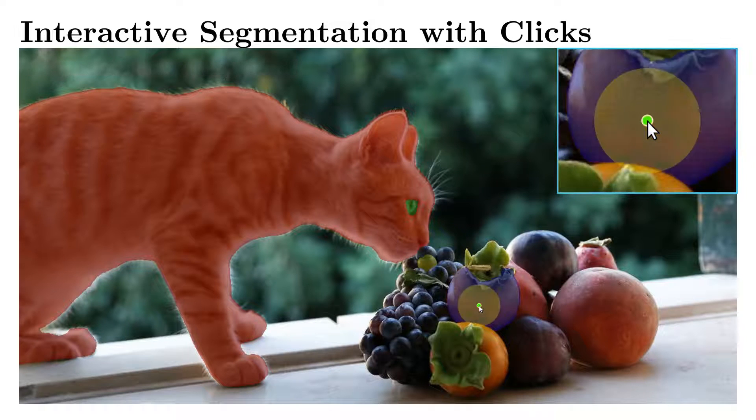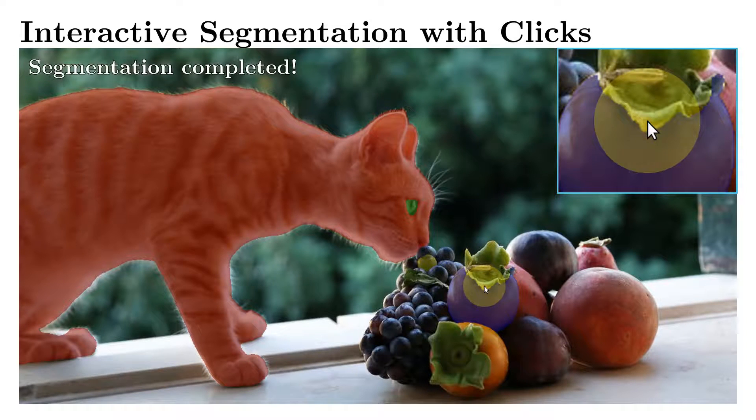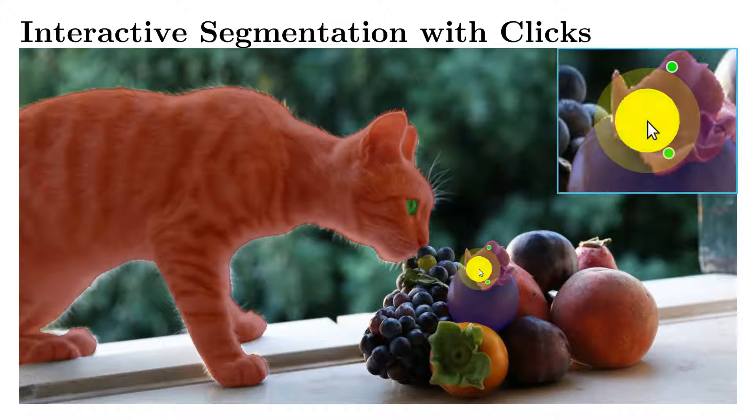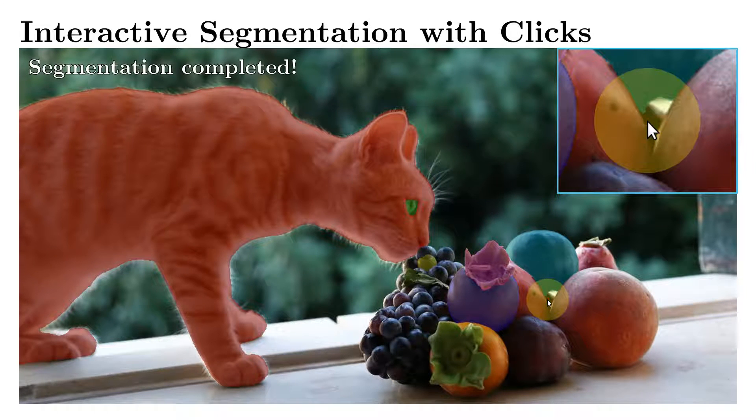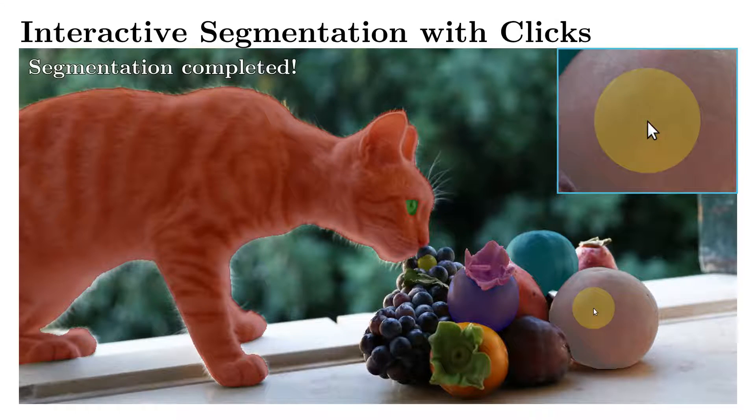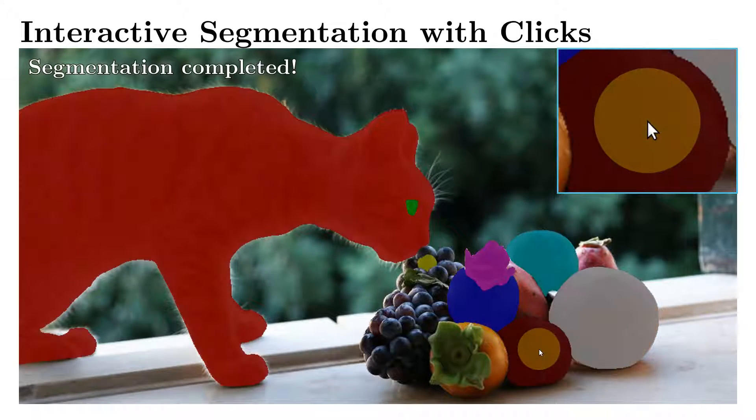You can see how our interactive segmentation tool works. It can segment various types of objects, including those not presented in the dataset. Even small objects, e.g. cat's eye or fruit stem, can be segmented with high accuracy.